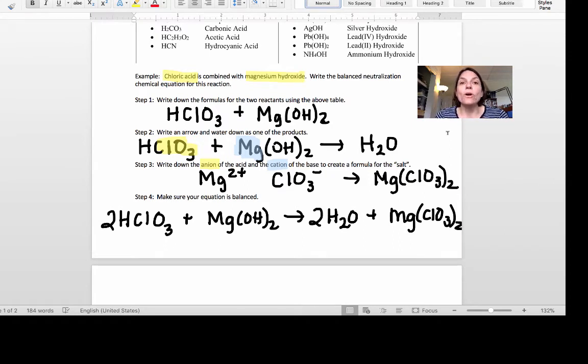We know one of the products is water, so let's go ahead and put that in. You're going to make an arrow and you're going to write H2O as one of your products. Now the tricky part is figuring out what the salt is going to be.